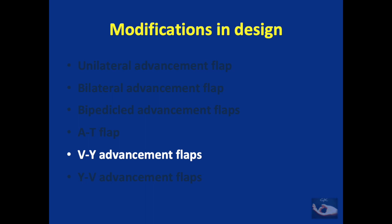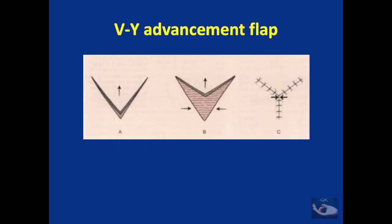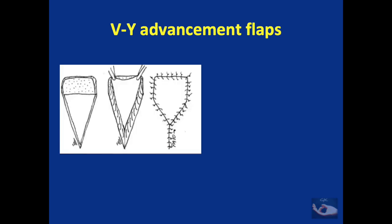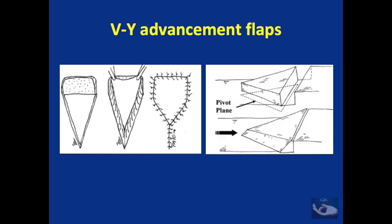Next comes the important design of the VY advancement flap. The basic principle is that the flap is shaped like a V and the secondary defect caused by raising this flap is closed in the pattern of a Y. Since the V shape goes completely around the flap, the blood supply comes from what is known as the subcutaneous pedicle.